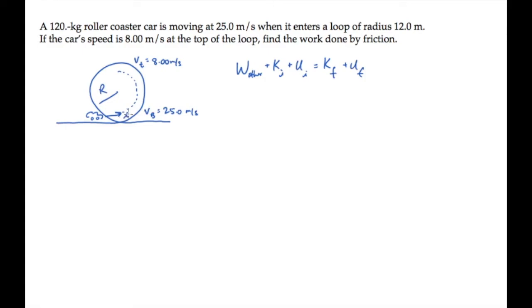If we label the bottom as the initial point and the top as the final point, we can solve for the work. In between those two points, work other is the work done by friction, and it equals the difference in the kinetic energies plus the difference in the potential energies.